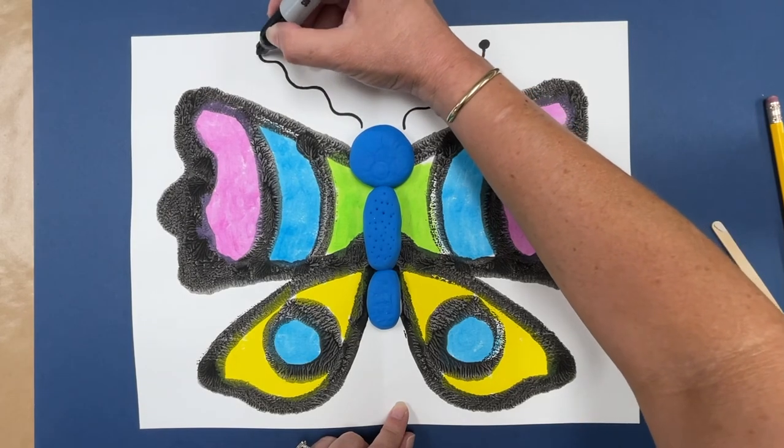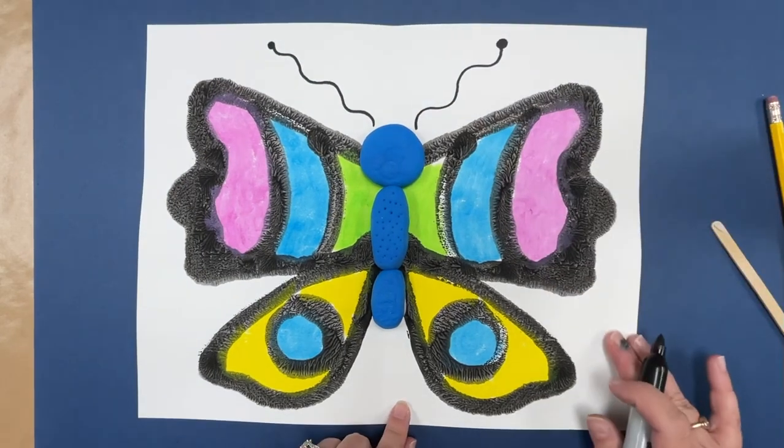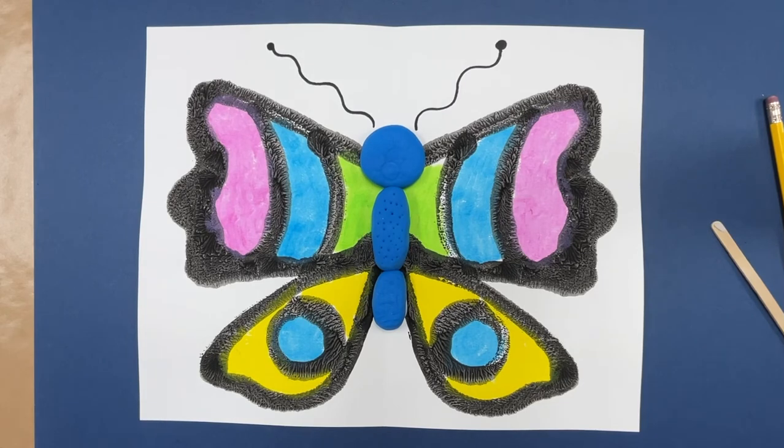It could be a straight line, a curvy line, a zigzag line, whatever you want. And there is your very own butterfly.